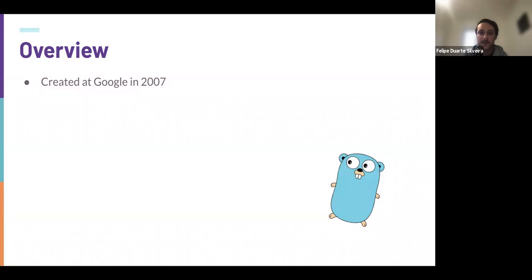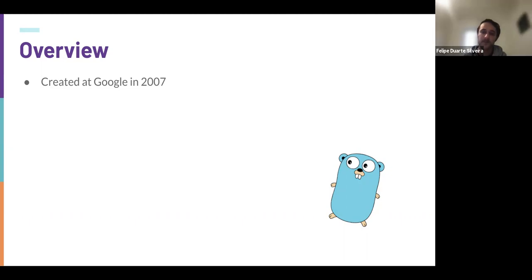I'll start with an overview to give some context about the Go programming language. It was created at Google in 2007 to be a language that could be both performant, while also letting you be closer to memory and pointers and write more optimized code. It's really positioned between lower-level languages and higher-level ones — Go tries to be in between, being simple yet performant.